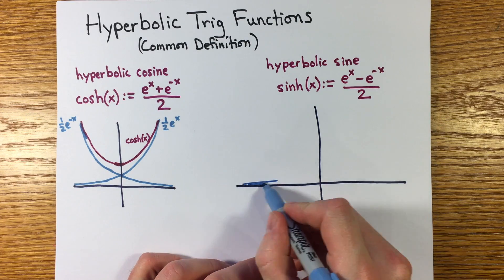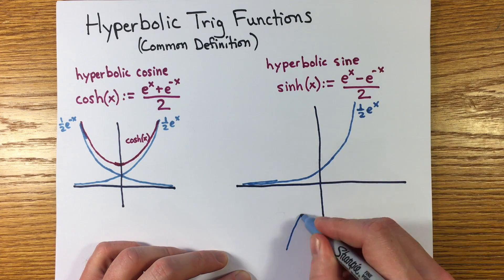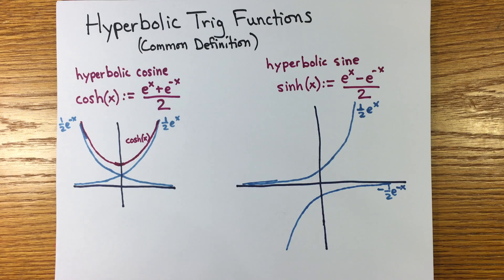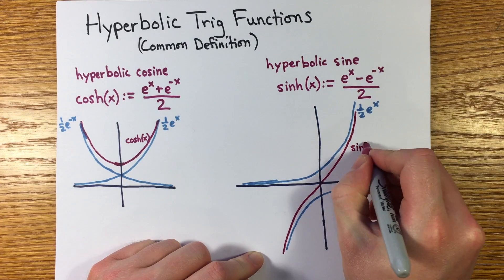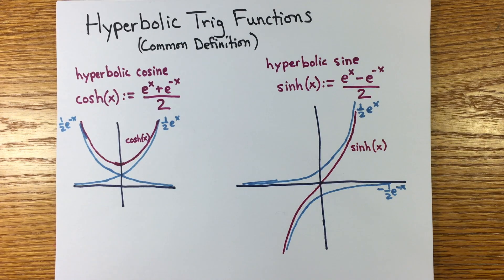The hyperbolic sine is sinh of x equals e to the x minus e to the minus x all over 2. You can see why these functions are not considered fundamental since they're expressible in terms of the exponential function.